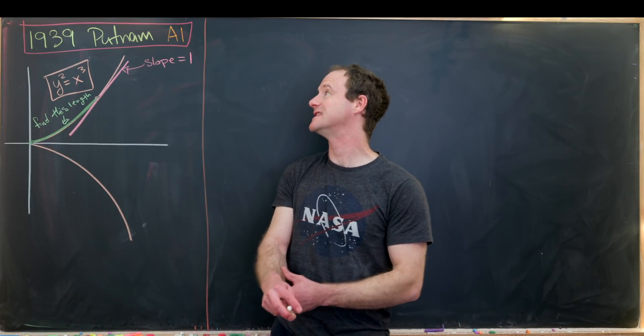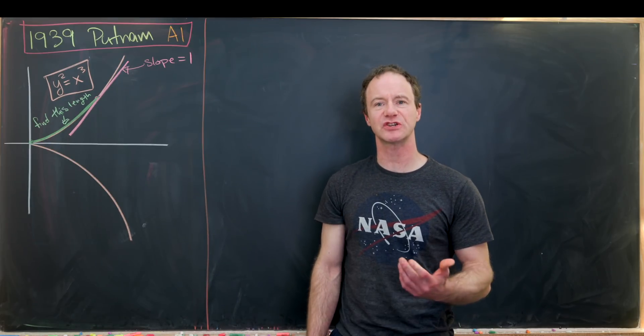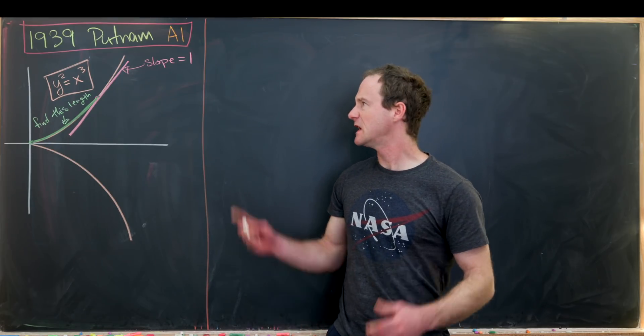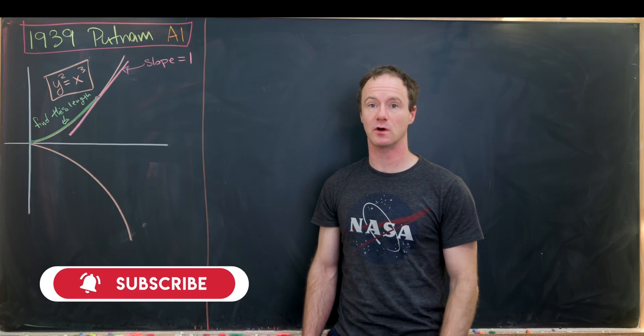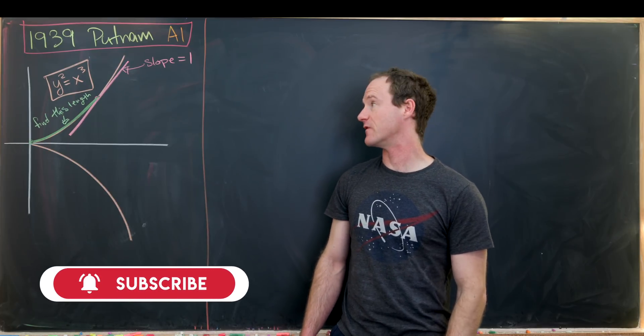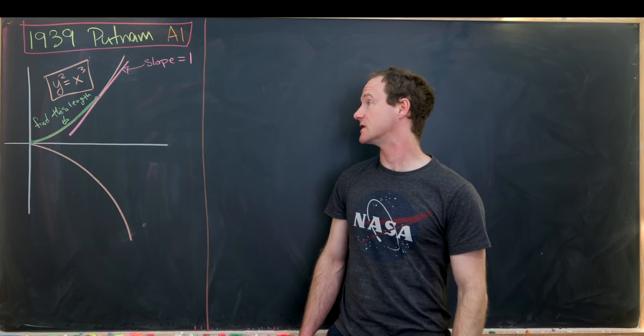Here we've got a nice problem from the 1939 Putnam exam, question A1. Speaking about 1939 for a little bit, that was in fact the year that I was born, so it's a little known fact that I'm a vampire. Okay, let's get into the problem.